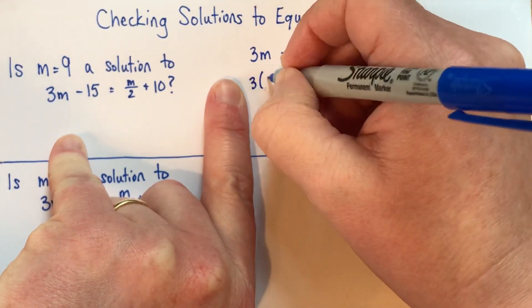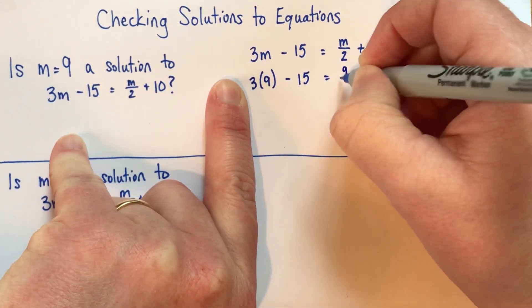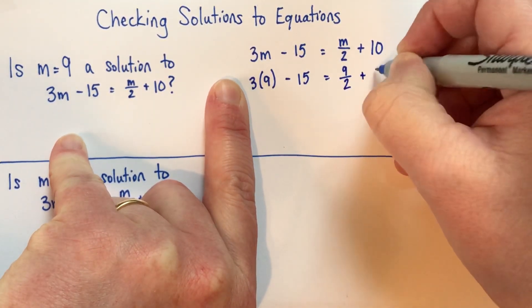So 3 times 9, subtract 15, equals 9 divided by 2, plus 10.